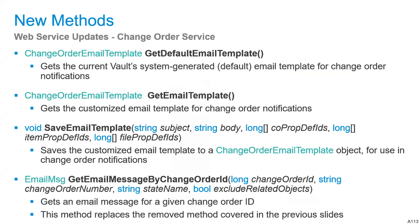Background methods include Get Default Email Template, which returns the vault system-generated email template — returning it to the out-of-the-box state. Get Email Template returns our new customized template if it's set, both returning the Change Order Email Template class. Save Email Template contains all the properties needed — subject, body, and all prop def IDs. Get Email Message By Change Order ID gets an email message for a given change order ID, replacing the method that was removed previously.